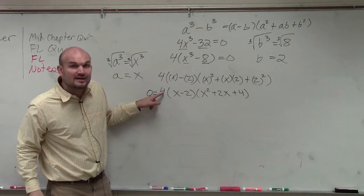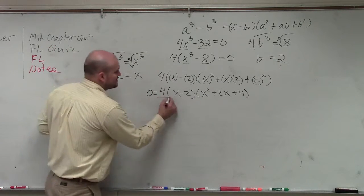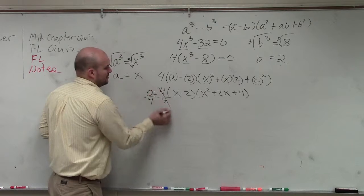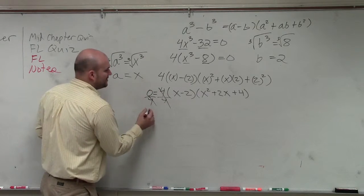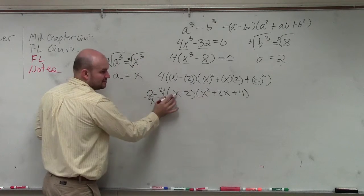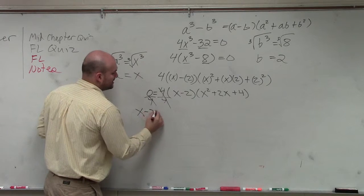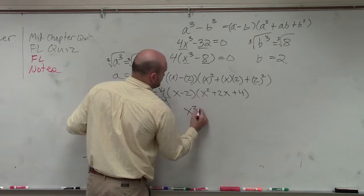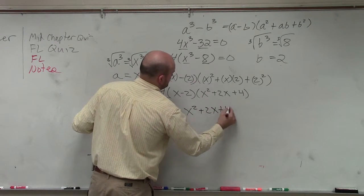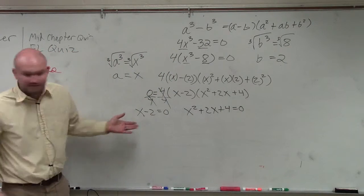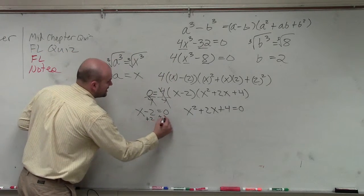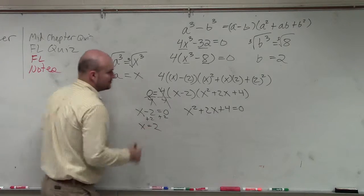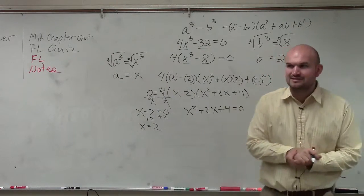So if we have a product of factors equal to 0, we can now apply the 0 product property. Now I factor out this 4. The 4 does not affect the 0s. So I can just simply divide that out. So therefore, I can set each of my factors equal to 0 and apply the 0 product property. Now this one is fairly easy to find the 0s. We just add 2 to both sides. x equals 2. Got that one done. That wasn't so bad.